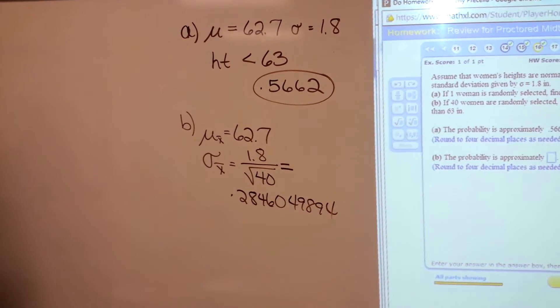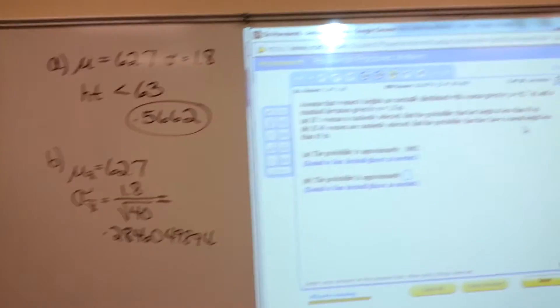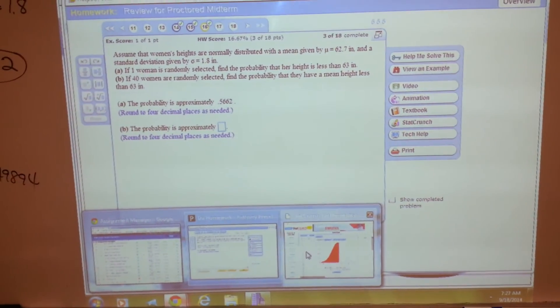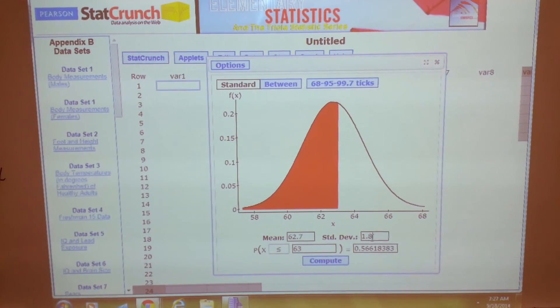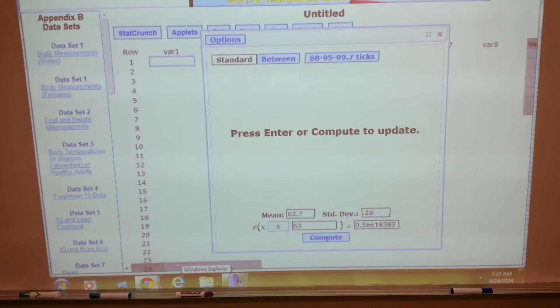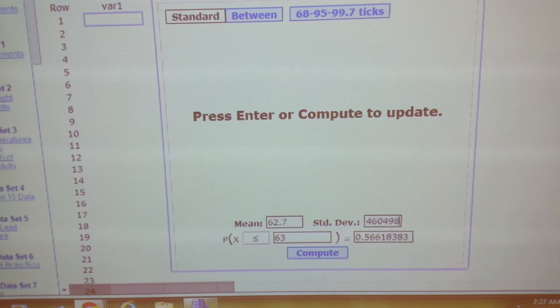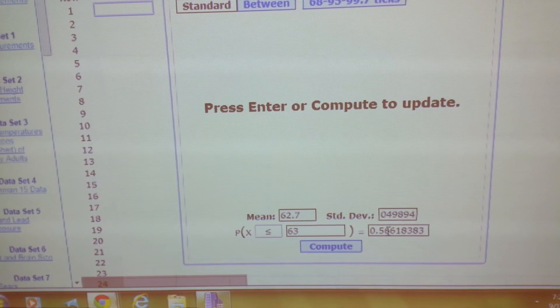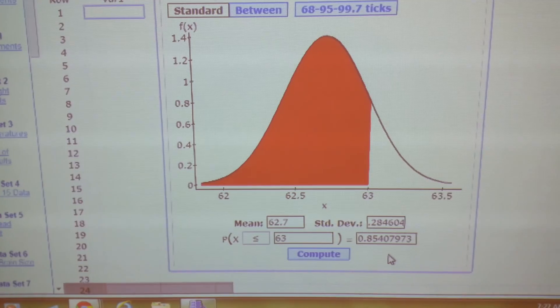Now I'll go back. And it's still asking for the same height, less than 63. So I'm going to pull up StatCrunch again. And some of this stuff will already be filled in. It's 62.7. I need to change the standard deviation to 0.28460. And 0.8541.